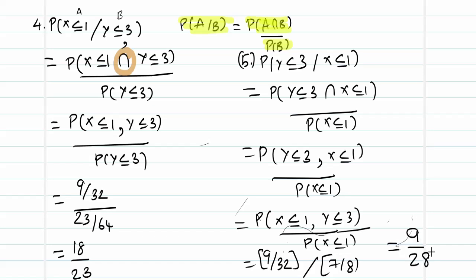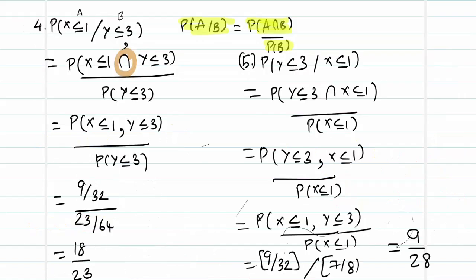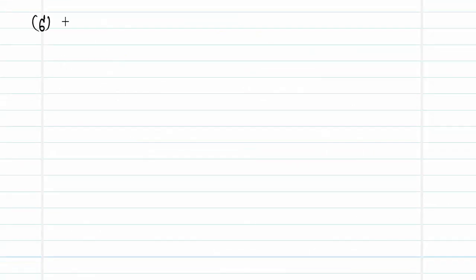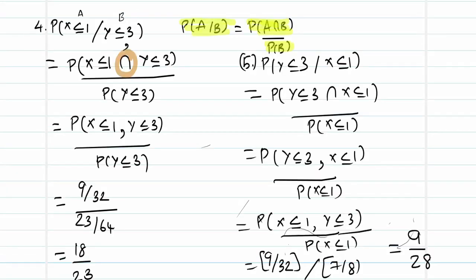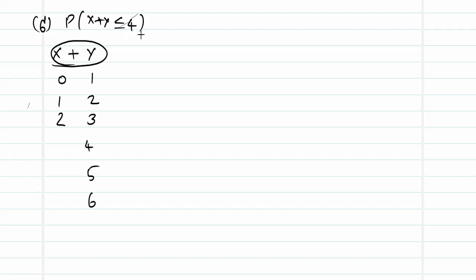Dividing 9/32 by 7/8 gives the answer 9/28, completing subdivision 5. Moving on to the last quantity: P(X + Y ≤ 4). We need to find which combinations of X and Y, when added, give a value less than or equal to 4.